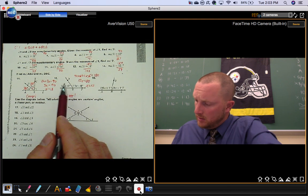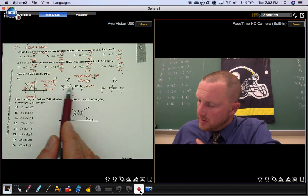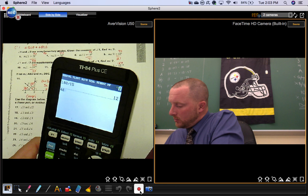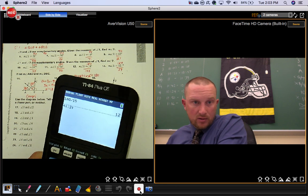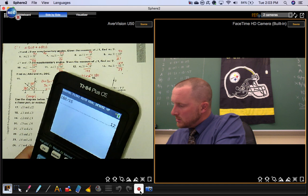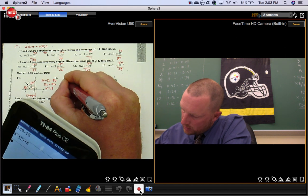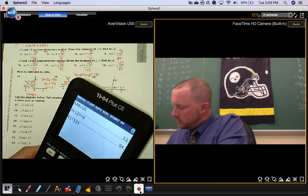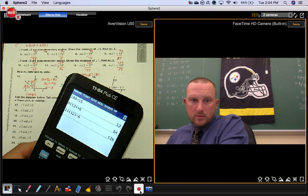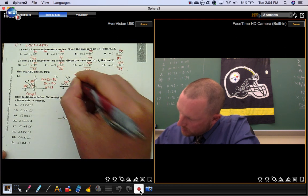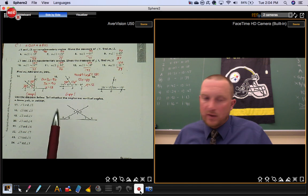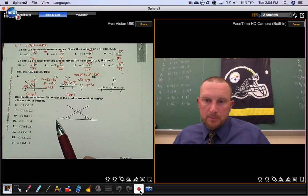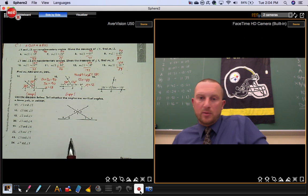And again, x isn't what they're asking you for. They're asking you for the angle measure, so you better plug back in. Okay, so I'll just show you on the calculator how to do that. 4 times 12 plus 6 gives you 54. 11 times 12 minus 6, that gives you 126. Those are your two answers. Those are the angles they wanted you to find. Now, how do you know that you're right? These angles add up to 180. And that's what we said from the beginning. They had to be supplementary.